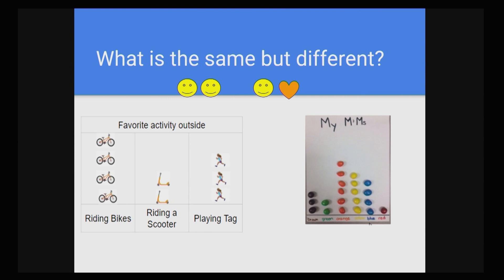Take a moment to look at these two graphs. What is the same but different? Remember, same means just like the two smiley faces. They look exactly alike. And different is like the smiley face and the heart. They look different. What do you notice that both graphs had when we went up with the data and the pictures or the objects is the same in each column? The picture graph is different because it has a picture for each activity. The M&M object graph has colors for each one.